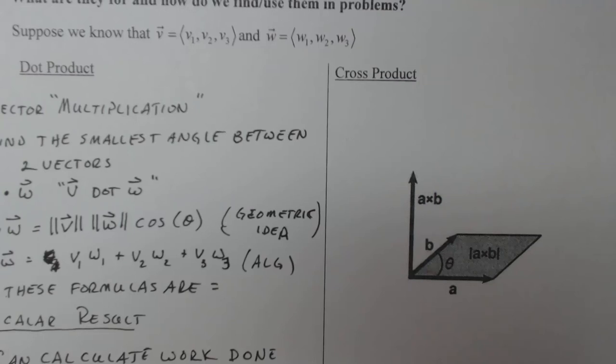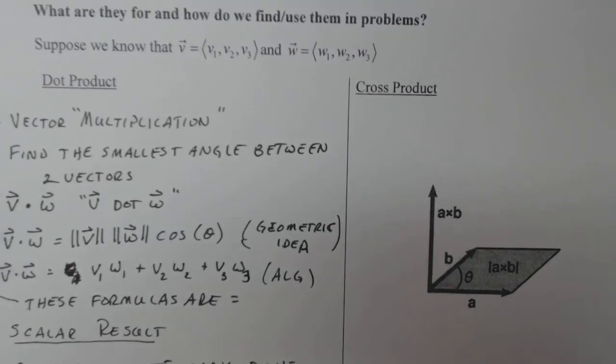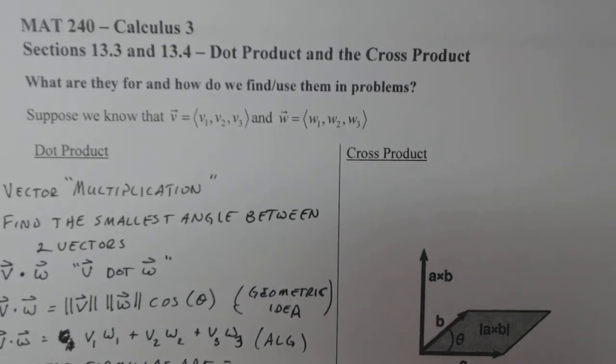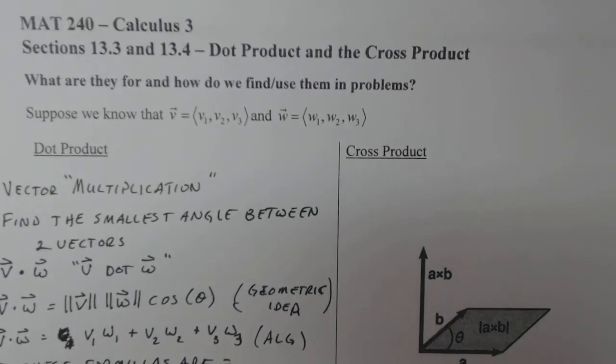All right, we're going to go over to cross product now. Dot product was 13.3, and cross product is 13.4, just so you know.